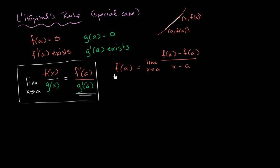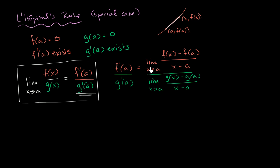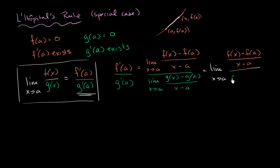So f prime of a over g prime of a can be written as the limit as x approaches a of f(x) minus f(a) over x minus a, divided by the limit as x approaches a of g(x) minus g(a) over x minus a. Since both the numerator and denominator share the same limit, we can rewrite this as a single limit as x approaches a of [f(x) minus f(a) over x minus a] divided by [g(x) minus g(a) over x minus a].